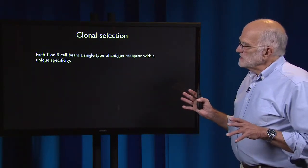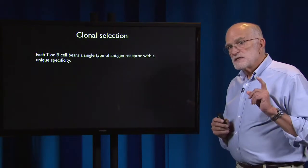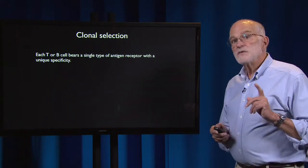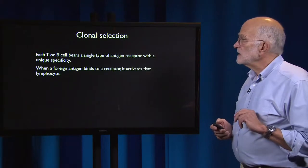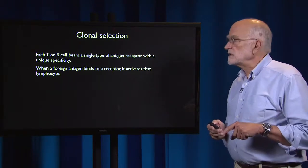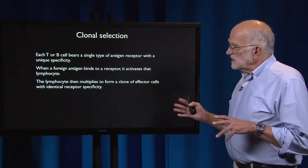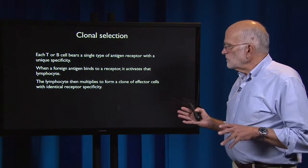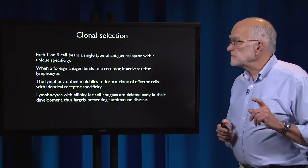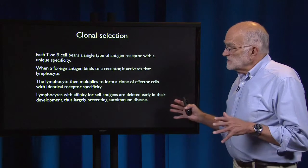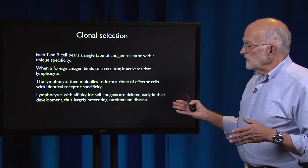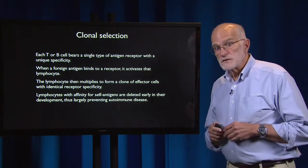Every T or B cell bears a single type of antigen receptor that has a unique specificity. When a foreign antigen binds to a receptor, it activates that lymphocyte. The lymphocyte then multiplies to form a clone of effector cells that have identical receptor specificity. Lymphocytes that have affinity for self-antigen are deleted early in development, and that largely prevents autoimmune disease.